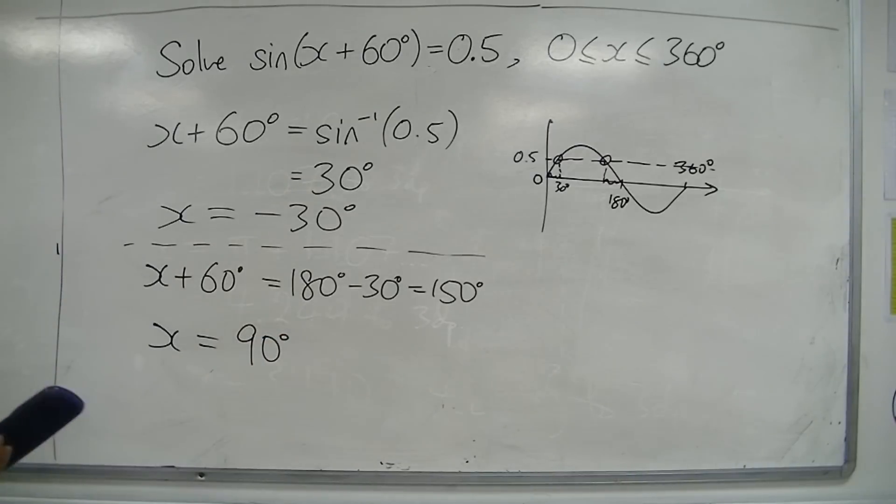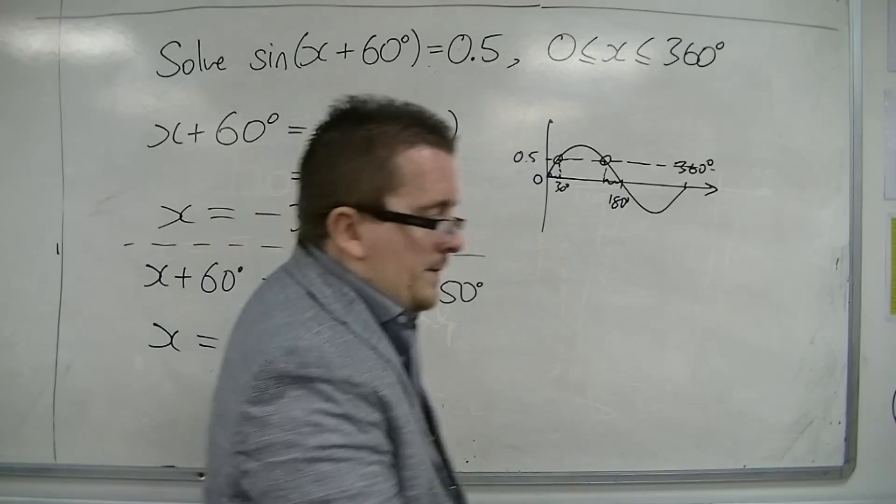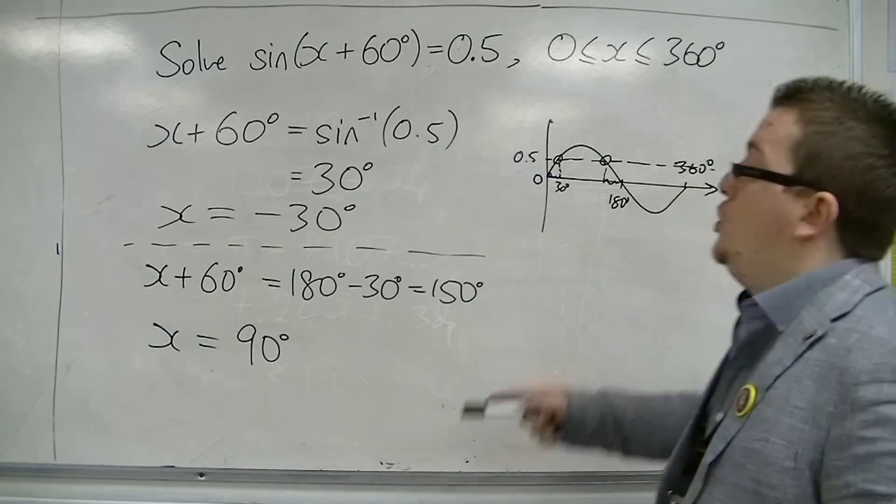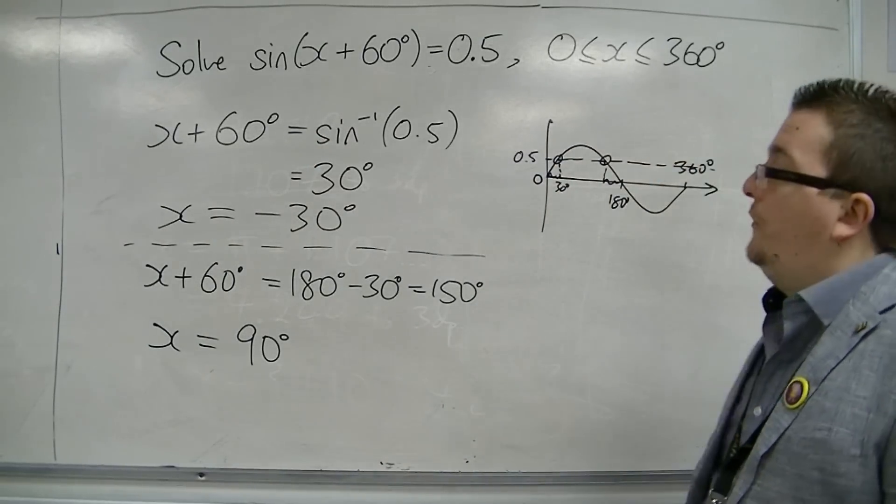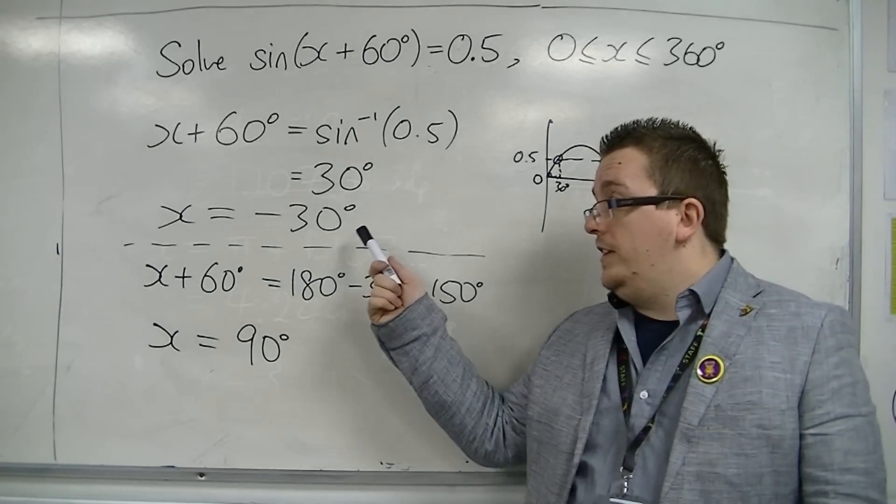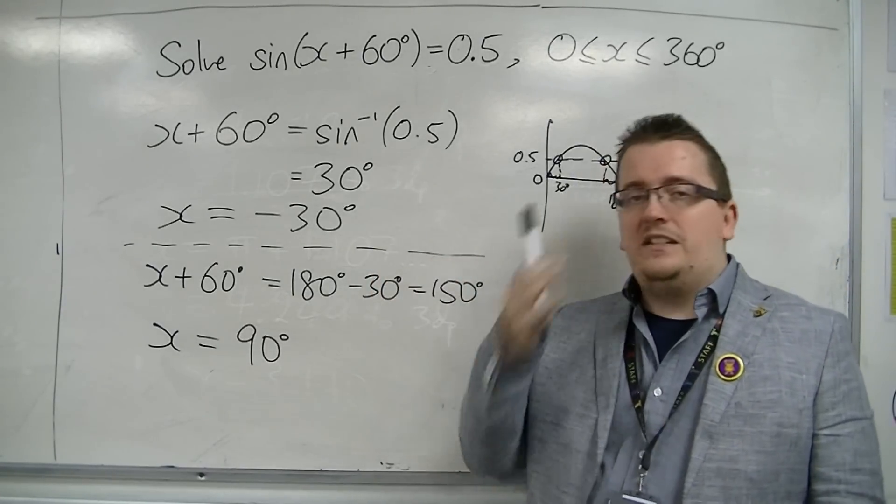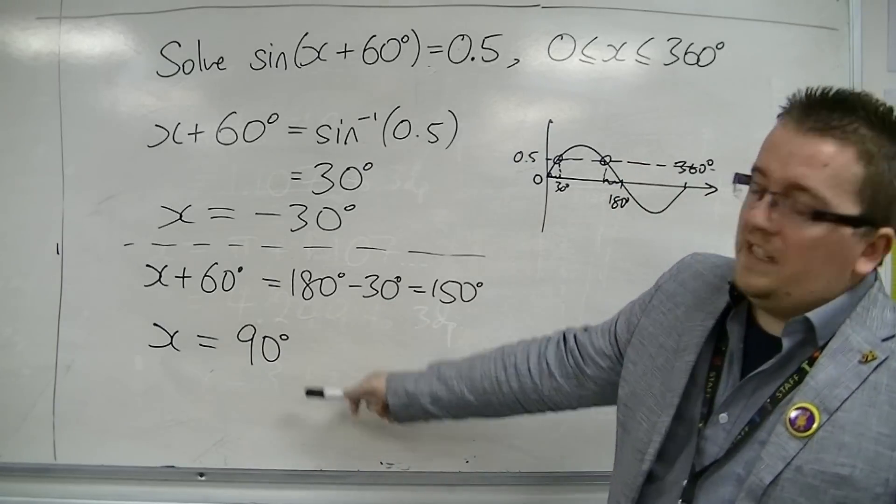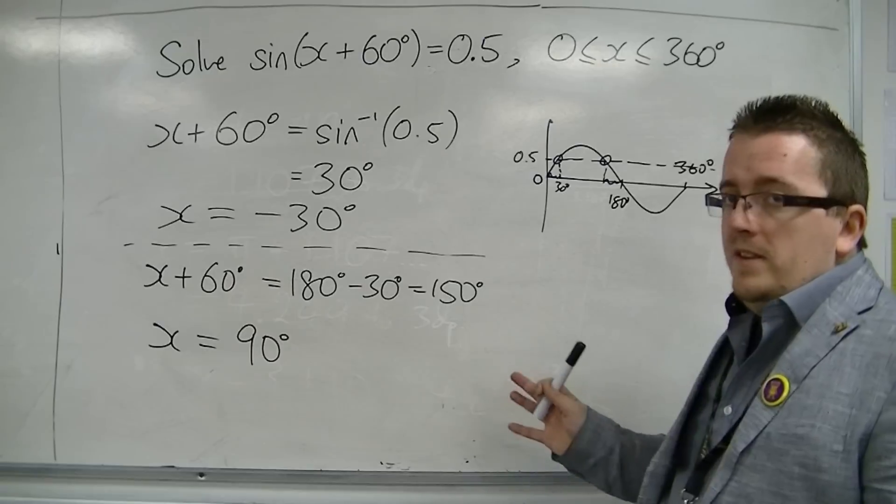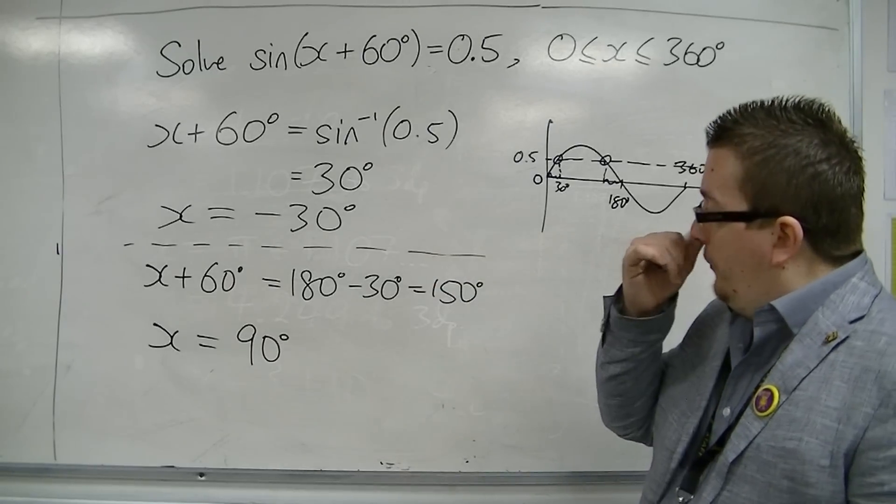Okay, so I've got minus 30 degrees and 90 degrees. Now there's a problem here because I'm looking for solutions between 0 and 360. So minus 30 is outside of that domain. x equals 90, that's fine, that's between 0 and 360, but minus 30 is outside.